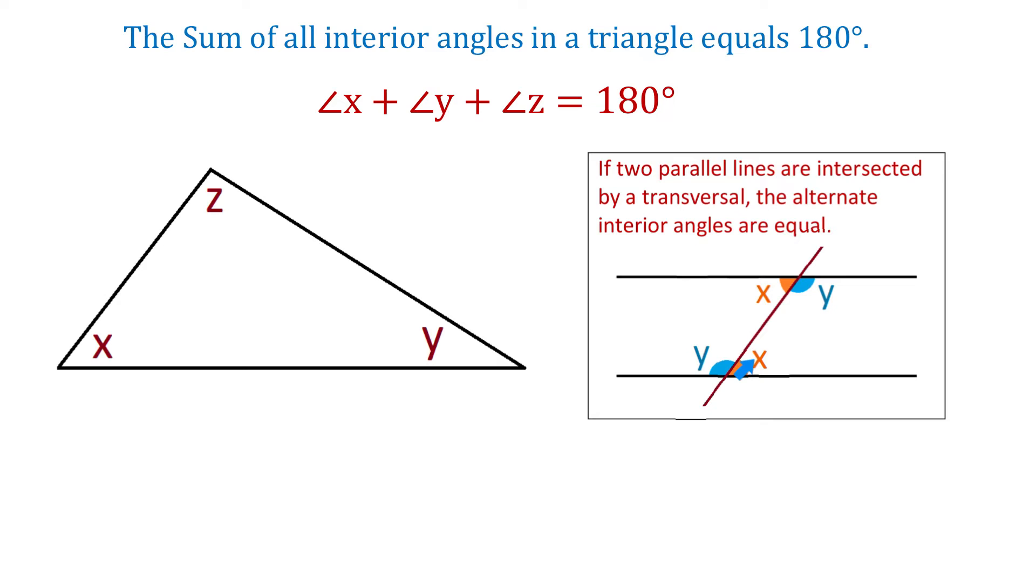If one of them measures x degrees, then the other one is also x degrees. And if this blue angle measures y degrees, then this one is also y degrees. Now to the left we have a triangle with the angles x, y, and z.